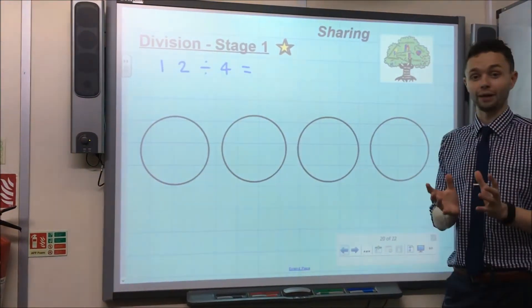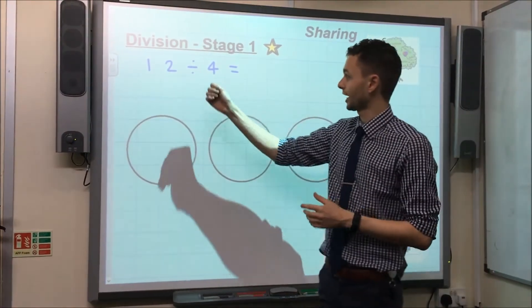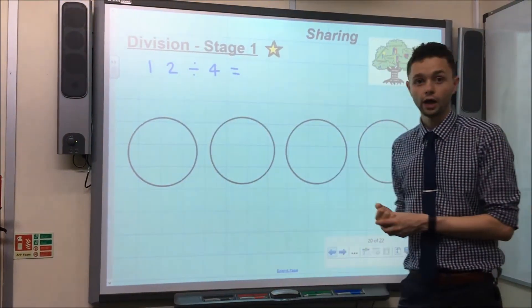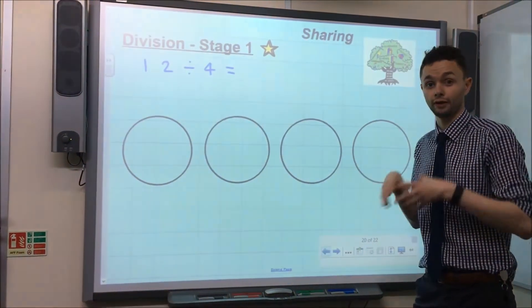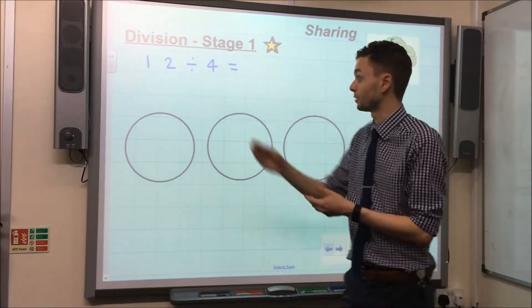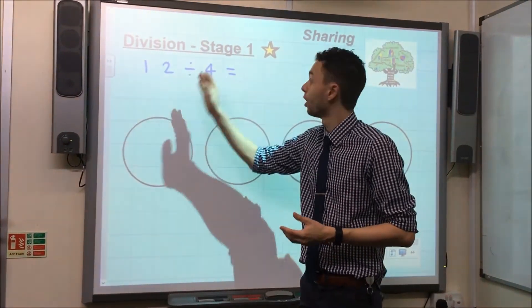So let's take a look at what that actually means. We've got the calculation 12 divided by 4. How we would explain this to children who are working at Stage 1 would be we're going to share 12 by 4.